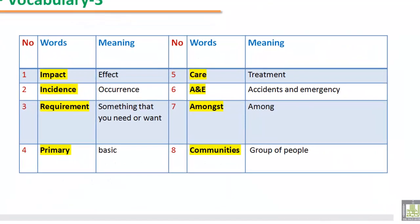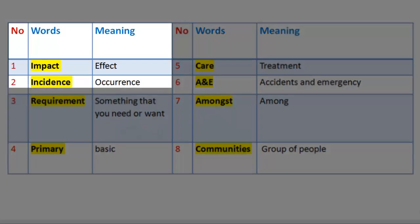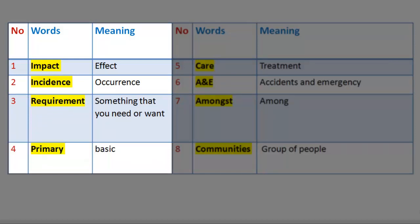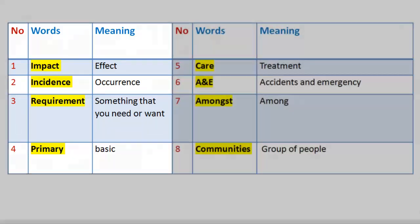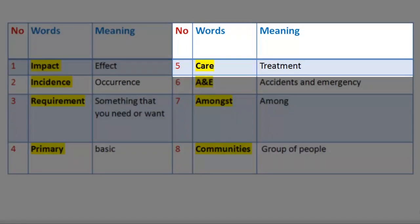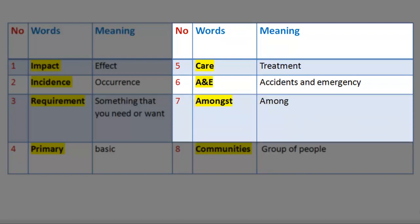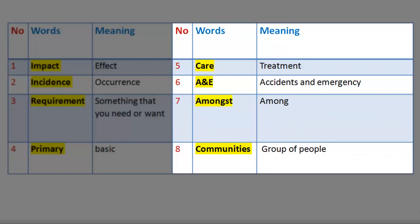Vocabulary 3. 1. Word: Impact — Meaning: effect. 2. Word: Incidence — Meaning: occurrence. 3. Word: Requirement — Meaning: something that you need or want. 4. Word: Primary — Meaning: basic. 5. Word: Care — Meaning: treatment. 6. Word: A&E — Meaning: Accidents and Emergency. 7. Word: Amongst — Meaning: among. 8. Word: Communities — Meaning: group of people.